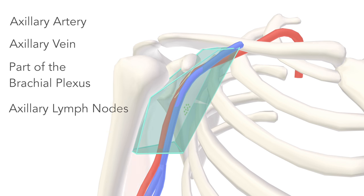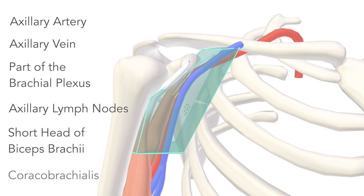The muscular contents are the short head of biceps brachii and coracoid brachialis. Removing the former, we see here the course of coracoid brachialis from humerus to coracoid process.